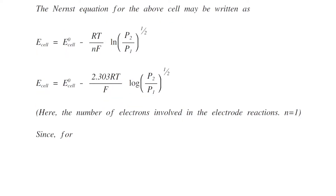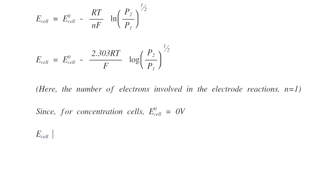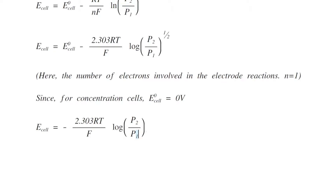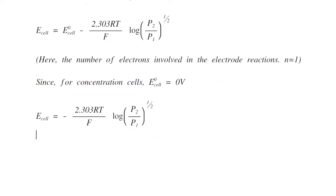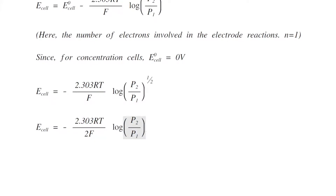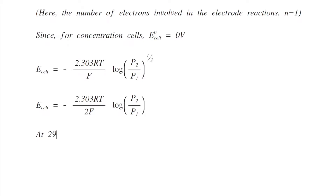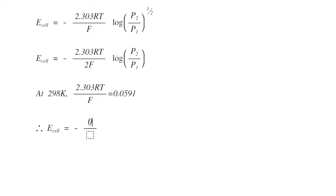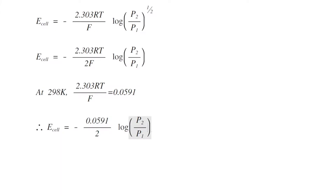Since for a concentration cell both electrodes are the same, E⁰ of the cell will be 0 volts. Therefore, E_cell becomes minus 2.303RT/F log of (P2/P1)^(1/2). Taking the power out of the log, E_cell becomes minus 2.303RT/2F log of (P2/P1). At standard conditions, that is 298 K, 2.303RT/F equals 0.0591. Therefore, E_cell becomes minus 0.0591/2 log of (P2/P1).